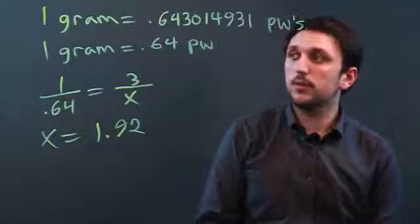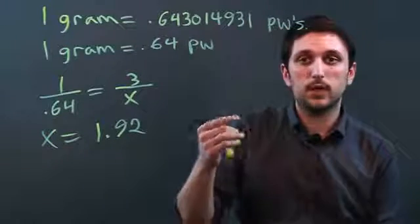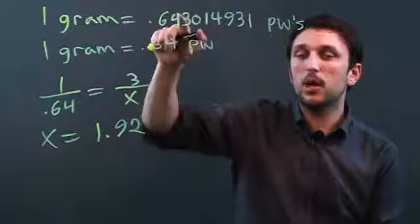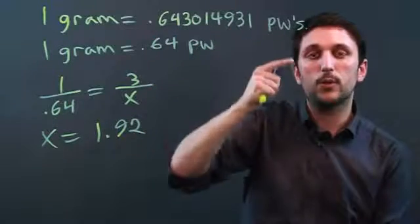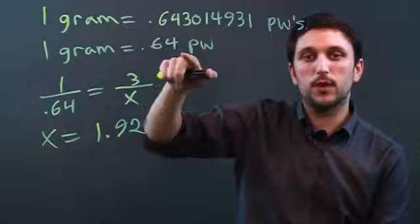So that is how you convert grams into penny weights, and that one gram equals 0.643014931 penny weights, which you can round to 0.64.